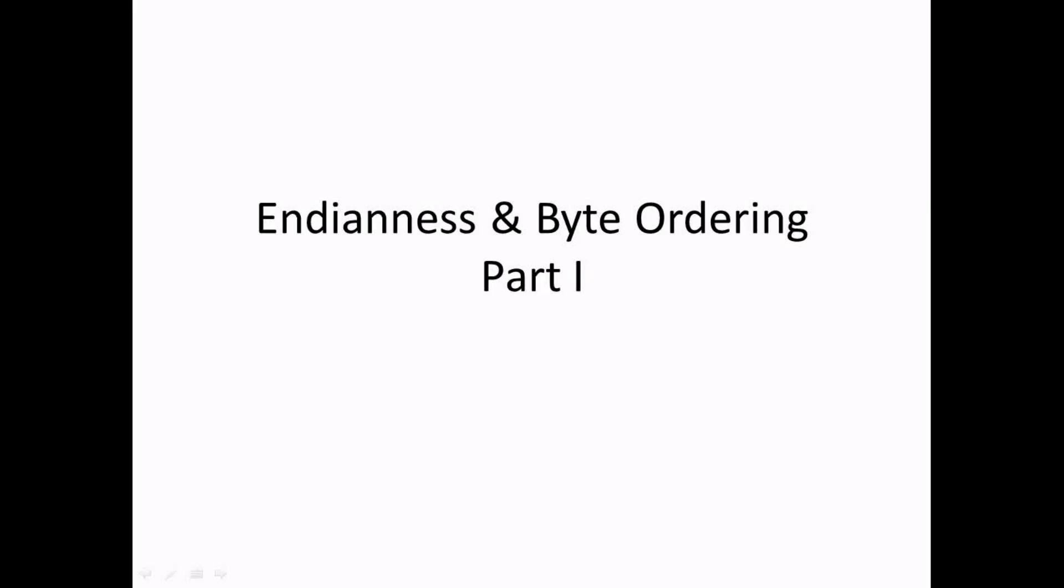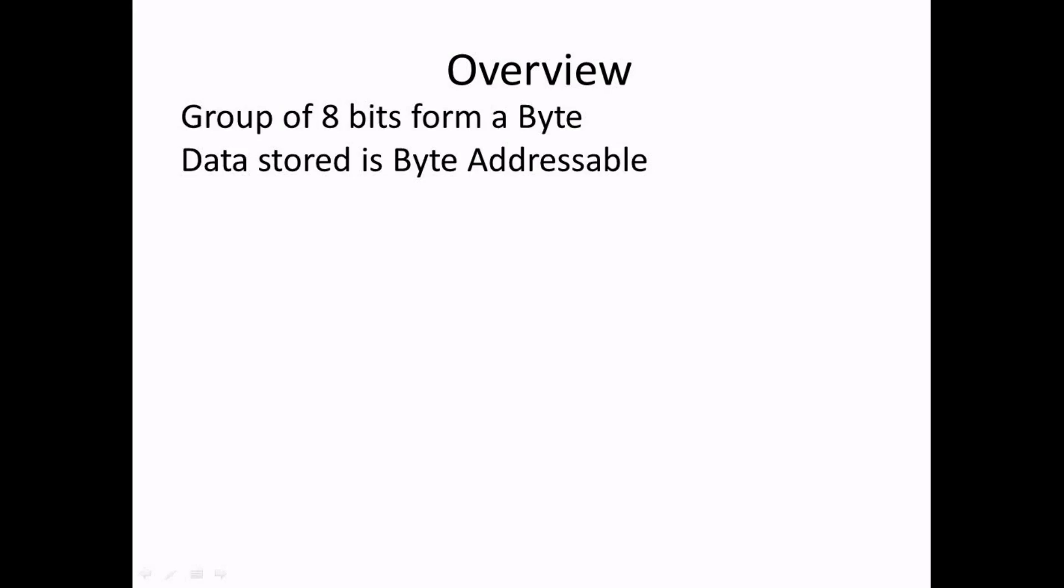In computing, a group of 8 bits is termed as a byte. The data stored in computer memory is always byte accessible. When storing any multi-byte data in memory, there are two ways in how we store and interpret them: little endian and big endian. Both these methods only differ in the way the bytes are ordered.